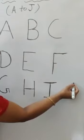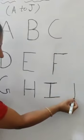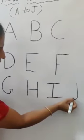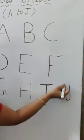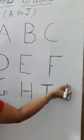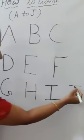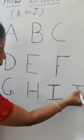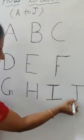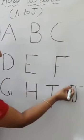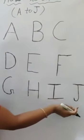Next letter is J: standing line, and curve it a little bit — aise ghumha deena hai — and at the top one slipping line which makes J. One more time: straight line, curve it a little — isko more deena hai — and one slipping line at the top makes J.